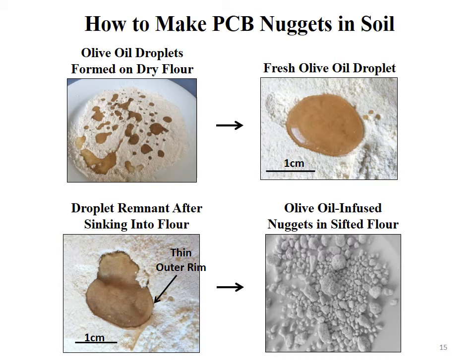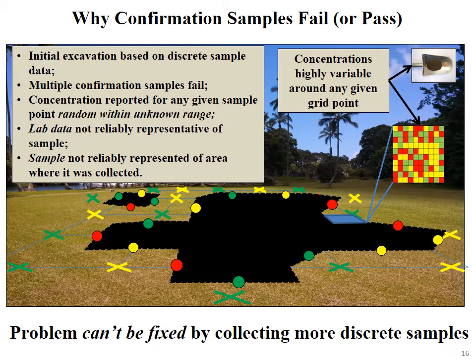Let this sit, then take a sieve and run the flour through it — you'll find these olive oil-infused nuggets. From a laboratory standpoint, if you send them this sample of flour with these nuggets — probably unnoticed — the laboratory for PCBs will test 10 grams of soil. If they happen to get a few of these little nuggets in their subsample, they'll get really high concentrations of PCBs; if they happen not to have any nuggets in those 10 grams, they'll get very low concentrations or even non-detect. This has always been a problem in the laboratory — this is why confirmation samples fail or pass. In our excavation example, we thought we had the contamination extent identified, excavated it, but you see these isolated hotspots with discrete sample data — these are classic signs of small-scale variability and are completely artificial.